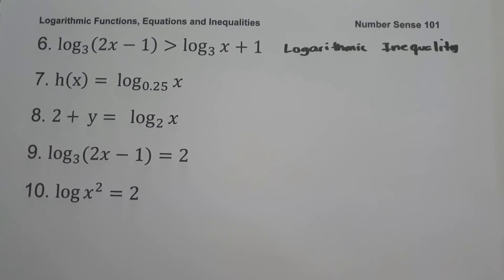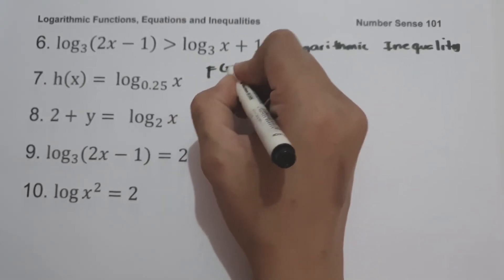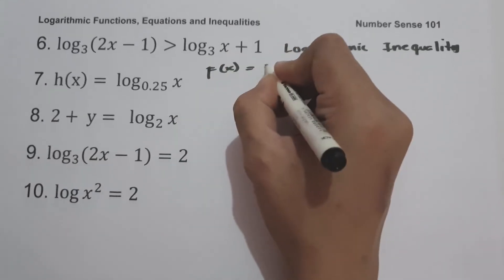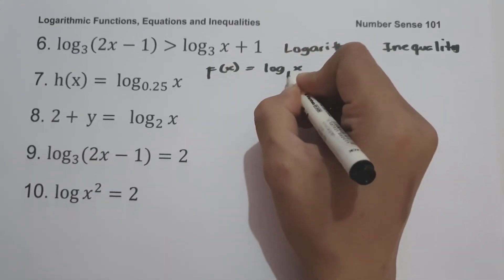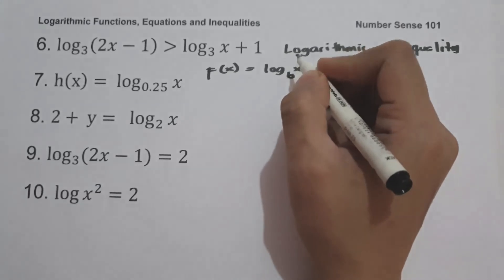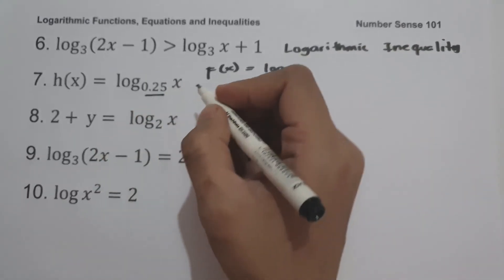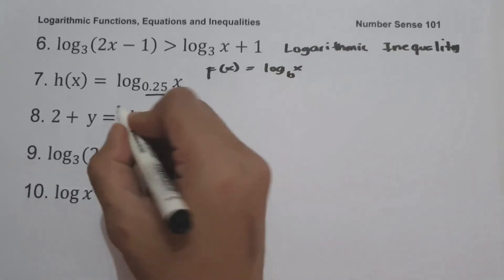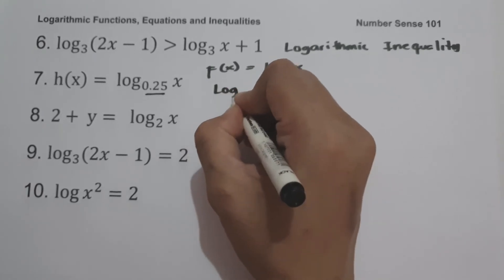On number 7, h(x) = log_4(x). Since the given function is written in the form f(x) = log_b(x) where b is greater than 0 and not equal to 1, therefore, this one is a logarithmic function.